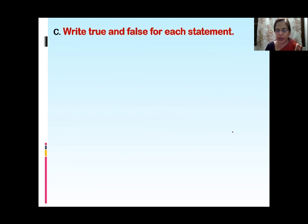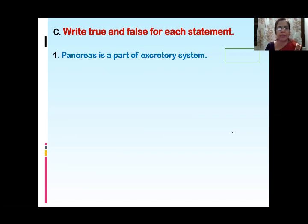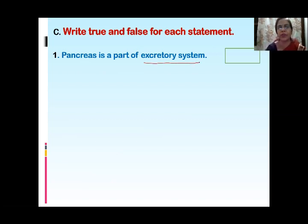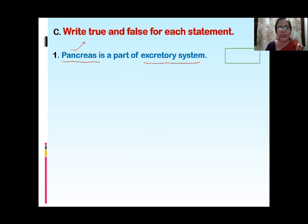Now, write true or false for each statement. The first question: Pancreas is a part of the excretory system. As you know, the excretory system helps to get rid of waste formed inside our body, whereas the pancreas releases pancreatic juice which helps in the process of digestion. So the statement that pancreas is part of the excretory system is false — pancreas is part of the digestive system.